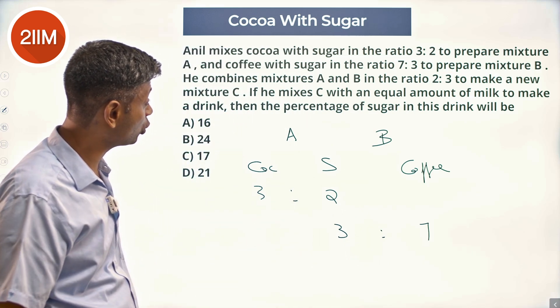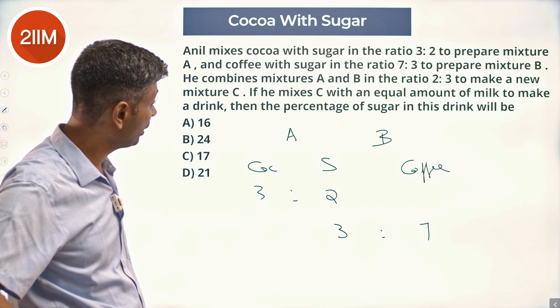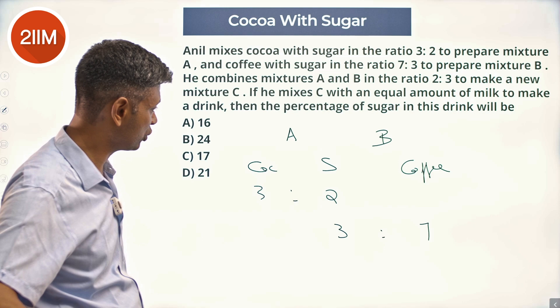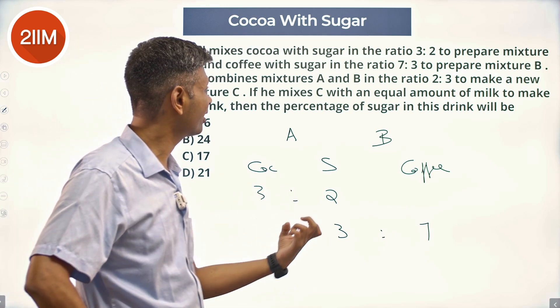He combines mixtures A and B in the ratio 2:3 to make a new mixture C. 2:3 to make mixture C. 2 units of this, 3 units of this.